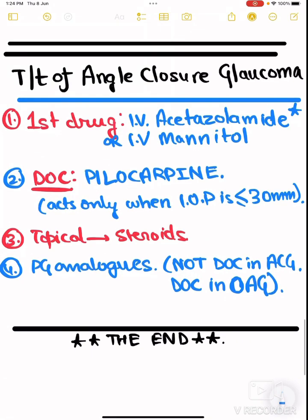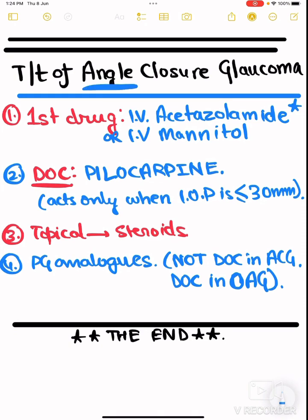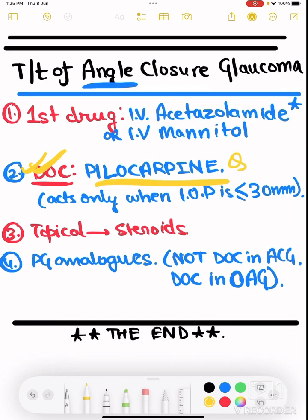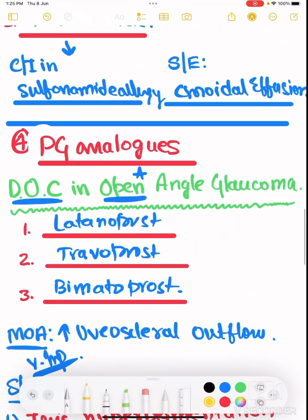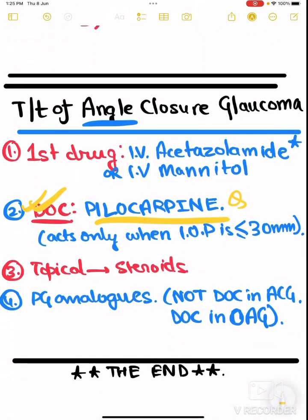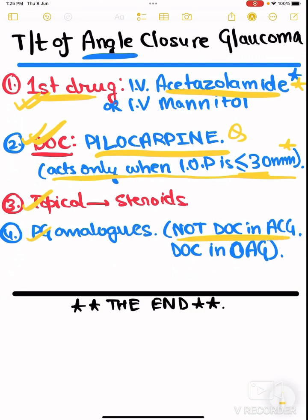For treatment of angle-closure glaucoma, the drug of choice is pilocarpine — not prostaglandin analogues, which are the drug of choice for open-angle glaucoma. However, pilocarpine is not the first drug used; the first drug is IV acetazolamide, because pilocarpine only acts when intraocular pressure is less than 30. So first, you reduce IOP below 30 with acetazolamide, then use pilocarpine. Topical steroids can also be used.